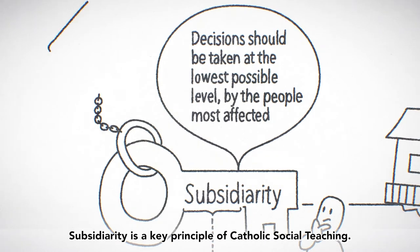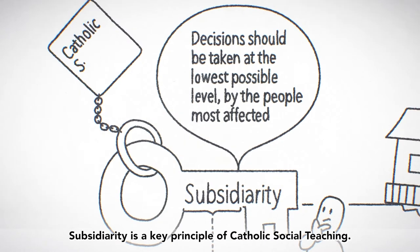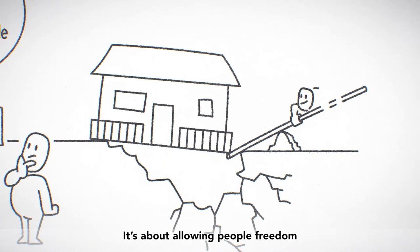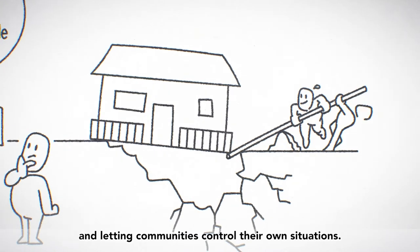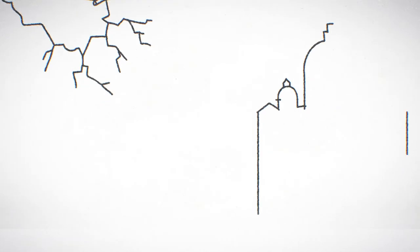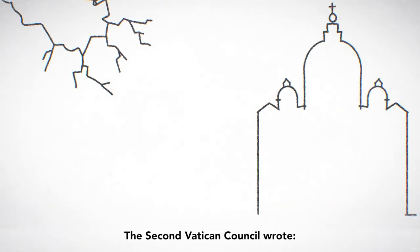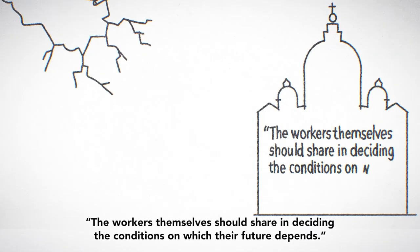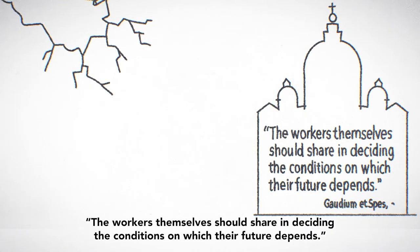Subsidiarity is a key principle of Catholic social teaching. It's about allowing people freedom and letting communities control their own situations. The Second Vatican Council wrote: the workers themselves should share in deciding the conditions on which their future depends.